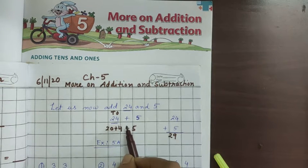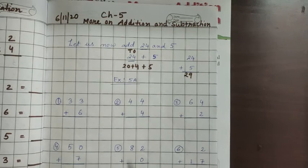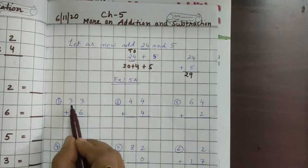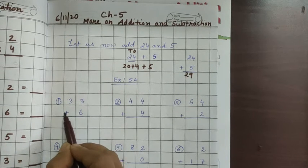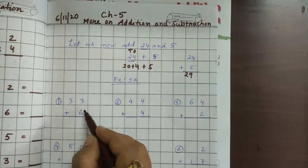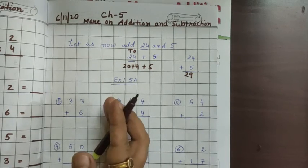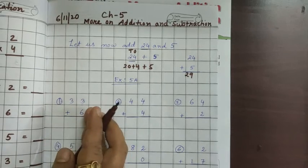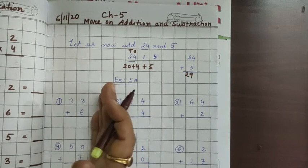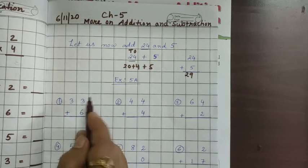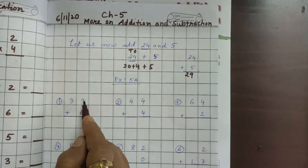Now let us do some exercises. Exercise 5A. Here it is written 33 plus 6. So we have to do the addition from the right side. From the right side means from the back we have to do the addition or subtraction, the ones with the ones digit.